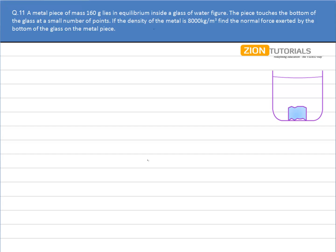A metal piece of mass 160 grams lies in equilibrium inside a glass of water as shown in figure. The piece touches the bottom of the glass at a small number of points. If the density of the metal is 8000 kg per meter cube, find the normal force exerted by the bottom of the glass on the metal piece.